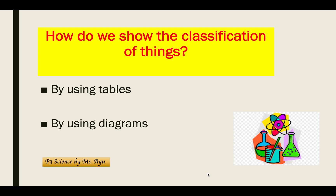How do we show the classification of things? We have two ways: by using tables and by using diagrams. Let's look at how a table looks and how a diagram looks.